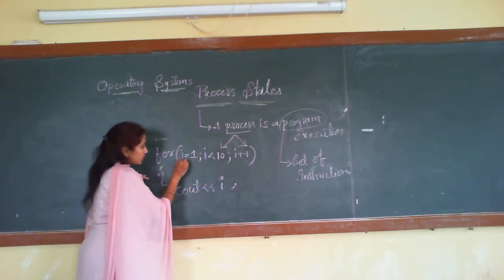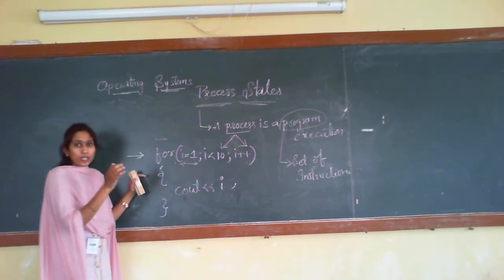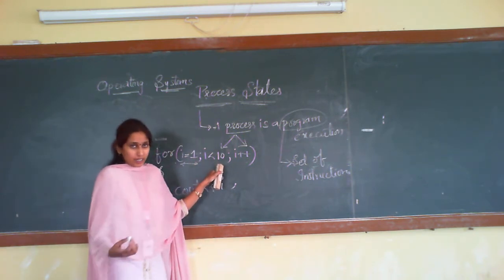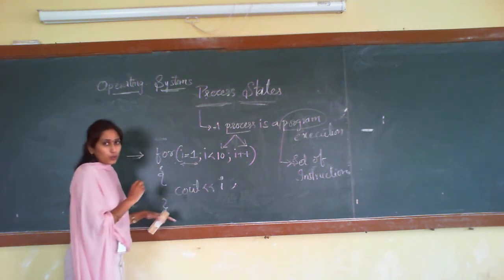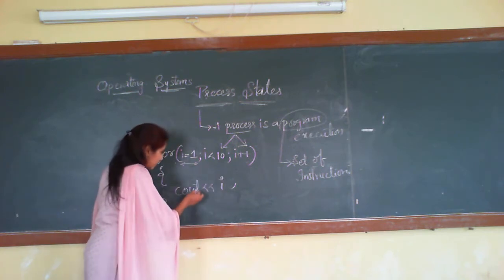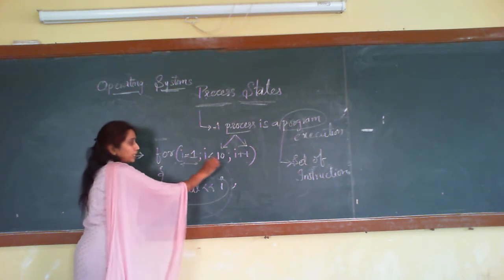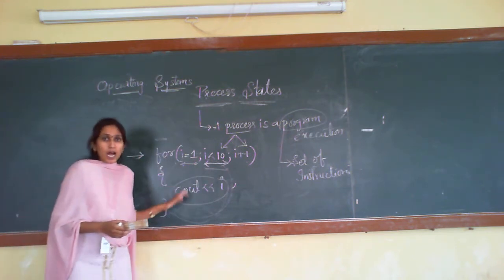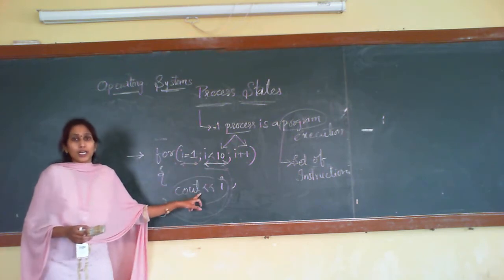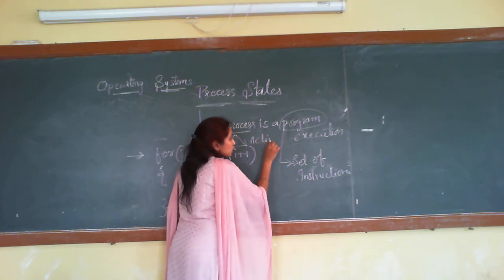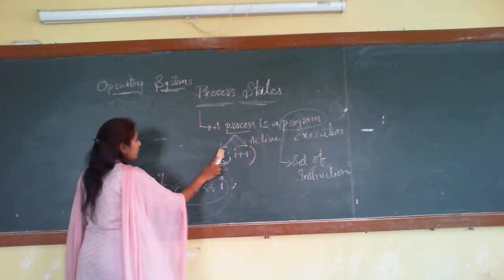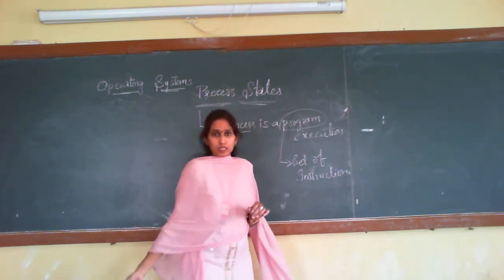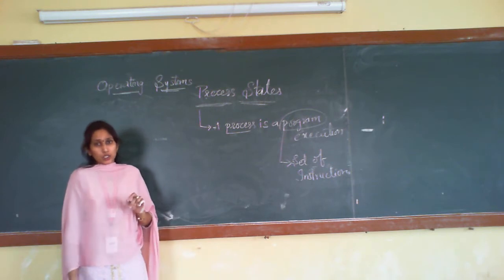Coming to this for loop: first it checks i equals to 1, initializes i with 1, then checks the condition whether 1 is less than or equal to 10 — yes, it is satisfied — so the loop body is executed. This loop continues until the condition becomes false, that is, the for loop gets false. During this repeated execution of the same instructions, we say it is an active process.